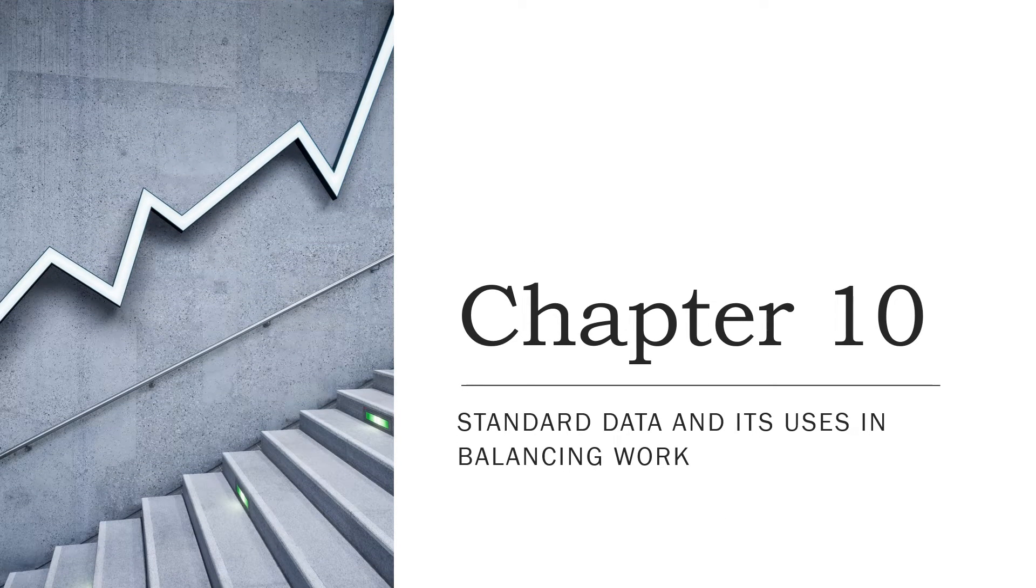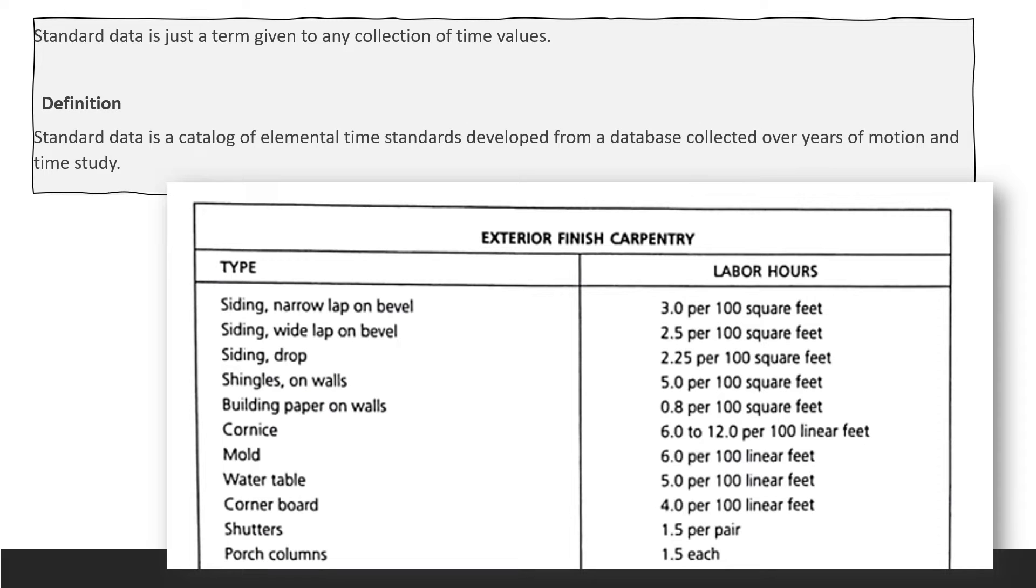Chapter 10 is about standard data and its uses in balancing work. Standard data is just a term for any collection of time values. In definition, standard data is a catalog of element time standards developed from a database collected over years of motion and time study.